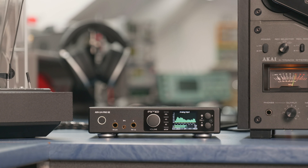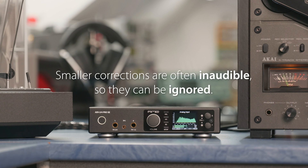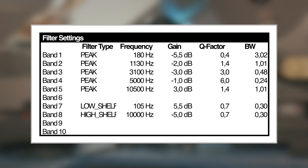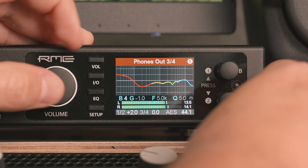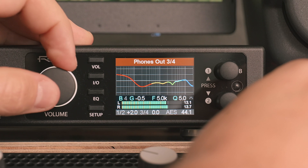As mentioned in the ADI's manual, smaller corrections are often inaudible, so they can be ignored. The ADI has all the tools to compare and check what is really needed. Looking at the filter table, there is already one suspicious entry: band 4, with a mere attenuation of minus 1dB, which might already be inaudible — and clearly is inaudible at a Q value of 6, since the frequency range affected is extremely small and then only corrected by 1dB. Most probably the change from this filter setting can be removed without any audible difference. Enter the PEQ settings of band 4 and change the gain from minus 1 to 0dB, which effectively disables this filter.